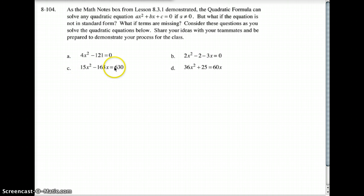Letter C. What's the issue here? Well, this isn't in standard form either. You'll notice that this one equals 630. In order to be in standard form, it must equal zero like these two did. So what do I need to do to both sides to get this side to be zero? Subtract 630. Please subtract 630 on this one, and then solve that one using the quadratic formula.